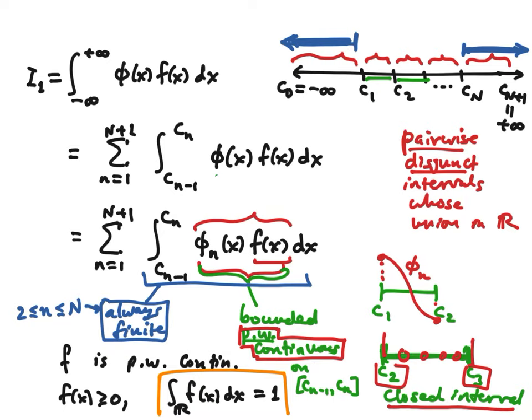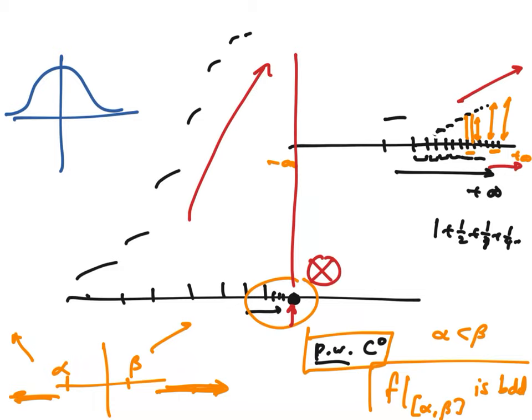It could be improper in two ways: one is that the interval of integration is unbounded, and the other is that f could approach plus infinity. We don't expect this to happen usually — a density function will actually decay to zero on both ends. That's the typical case, but it doesn't have to happen.